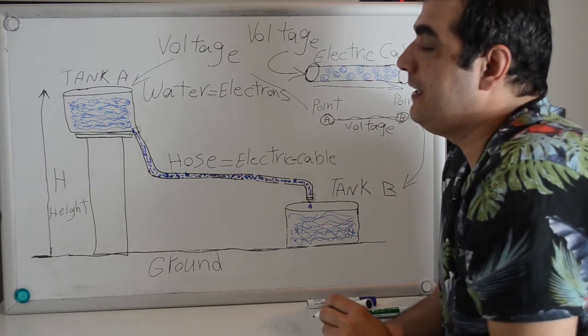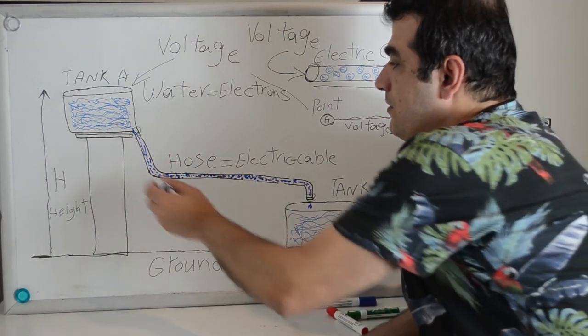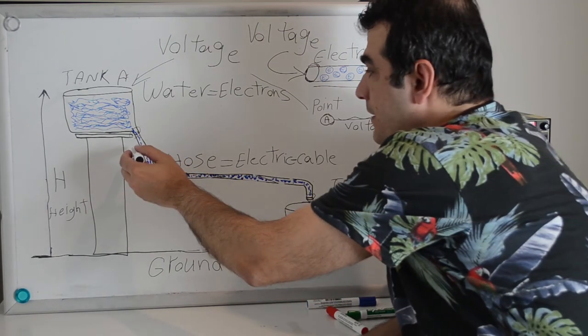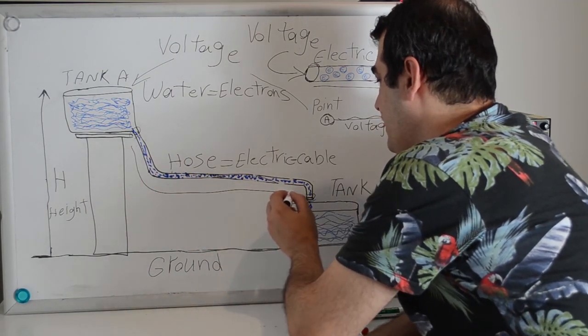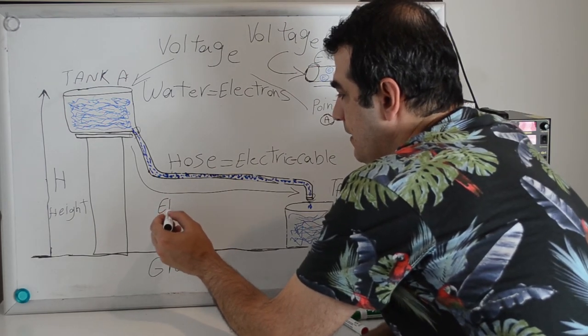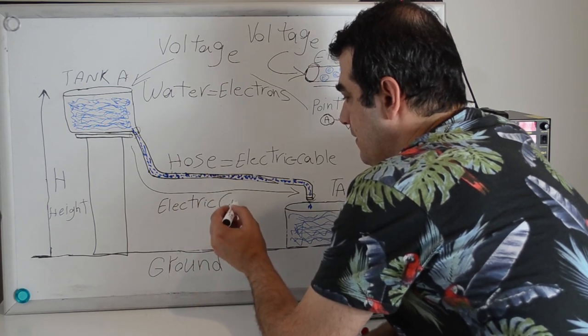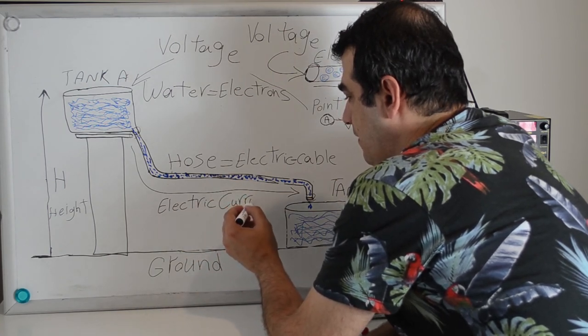And the movement of electrons or water in a specified direction is called electric current.